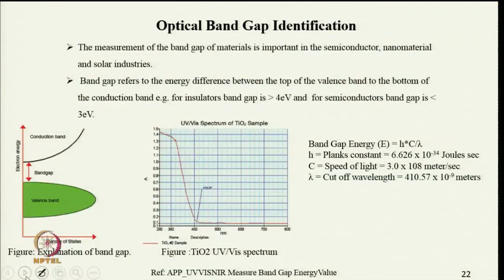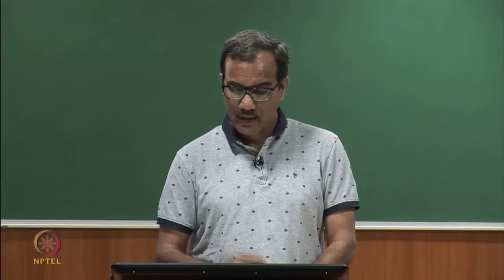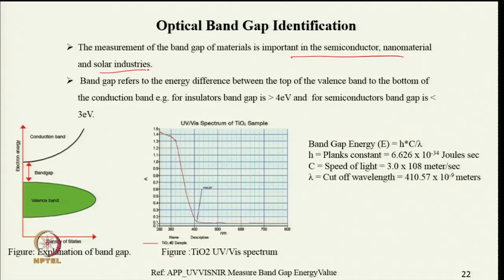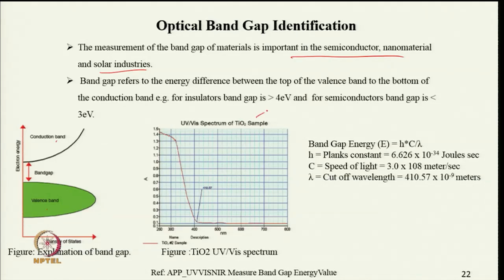Optical band gap identification can also be done using UV visible spectroscopy. The measurement of band gap of materials is important in the semiconductor, nanomaterial, and solar industries. Band gap refers to the gap between the valence band and the conduction band. By looking at the UV visible spectrum of a material — for example, TiO2 — you can determine what the band gap is. These are just a few of the many applications of UV visible spectroscopy.